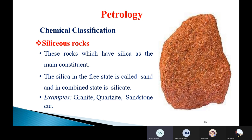The third classification is chemical classification. The first type under chemical classification is siliceous rocks. Siliceous rocks have silica as the main constituent. When silica is in a free state it is called sand, and in a combined state it is called silicate. Examples of siliceous rocks are granite, quartzite, and sandstone.